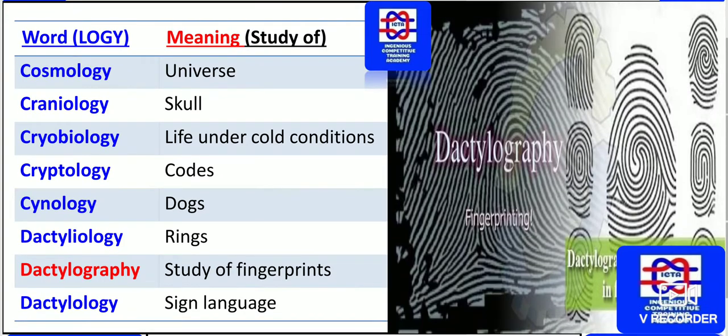Cosmology is the study of the universe — 'cosmo' means universe. The study of the skull — human skull — is known as craniology. The study of life under cold conditions is known as cryobiology. The study of codes — decoding or coding — is known as cryptology; that is the reason cryptogramming involves making things into coded language.